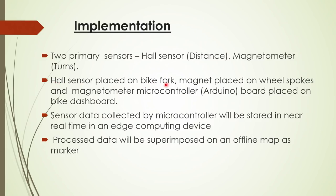We use a two-wheeler so that the OBD2 problem can be avoided. A hall sensor is placed on the bike fork, a magnet is placed on the wheel spokes, and a magnetometer is part of the hardware controller — essentially an Arduino board placed on the bike's dashboard. Sensor data is collected by the microcontroller, stored in real time in an edge computing device, and the processed data is superimposed on an offline map as a marker.